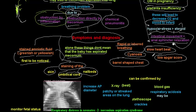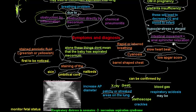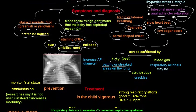With high suspicion of meconium aspiration, this can be confirmed by chest X-ray, which is the best test. On X-ray you see patchy or streaked areas on the lung due to meconium aspiration. You may also see an increased anterior-posterior diameter, indicating a barrel-shaped chest.